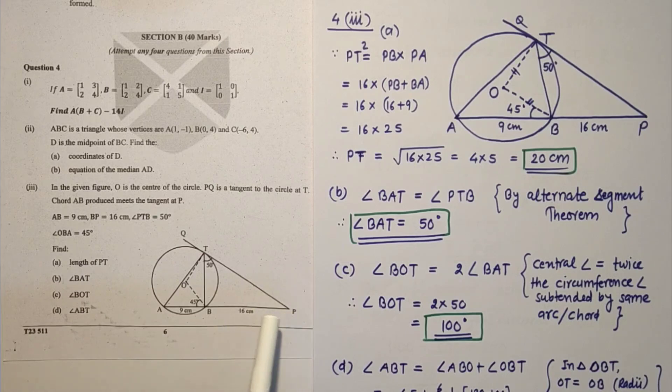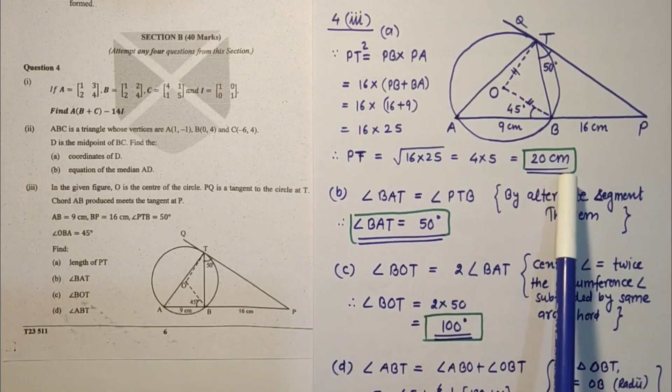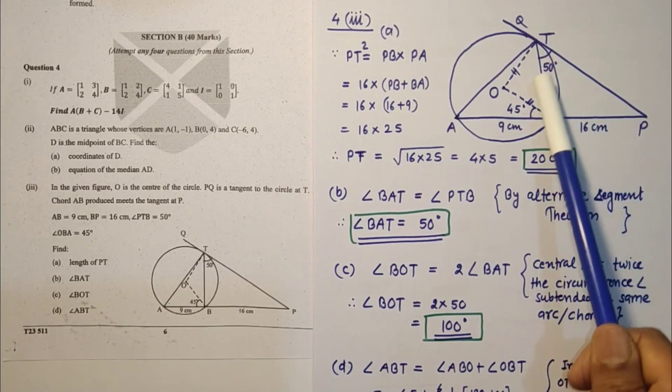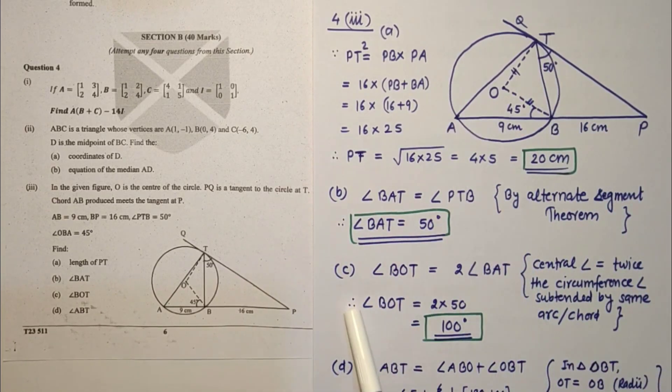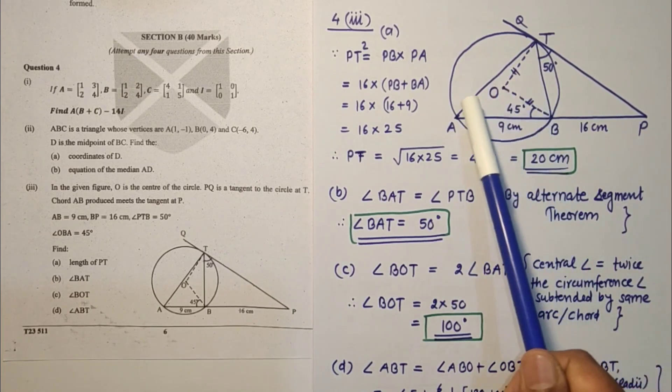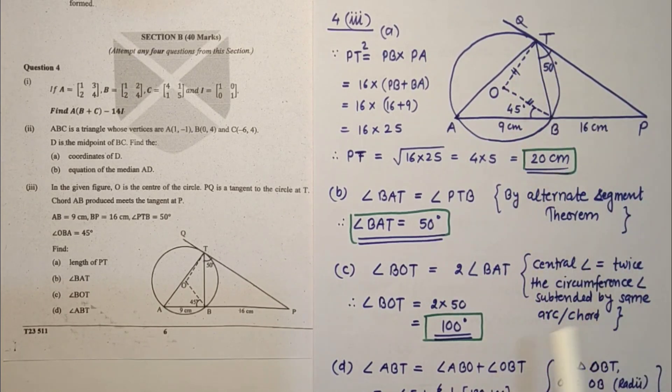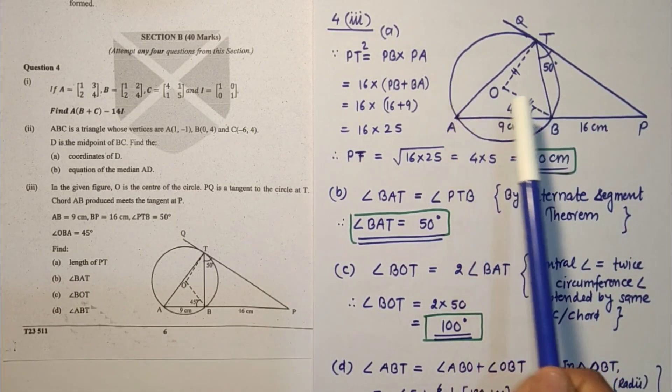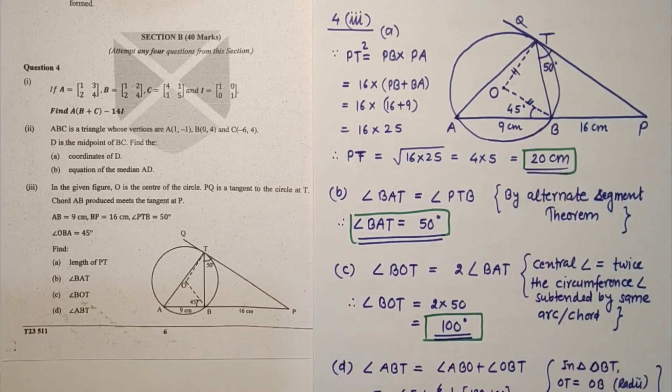PT square is equal to PB into PA using tangent secant property. I did that and got 20 cm, that is the length of PT. Angle BAT is 50 degrees because of alternate segment theorem. Angle BOT is 100, twice of this circumference angle. And ABT, we have to add ABO plus OBT. I found OBT as 40, so 45 plus 40 is 85. These are the answers.